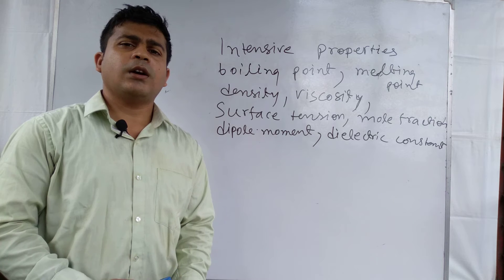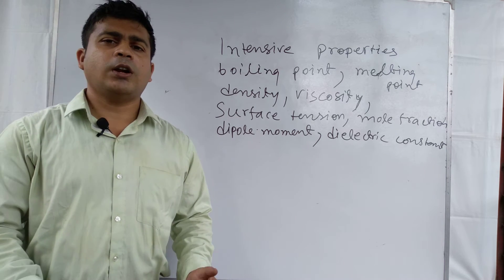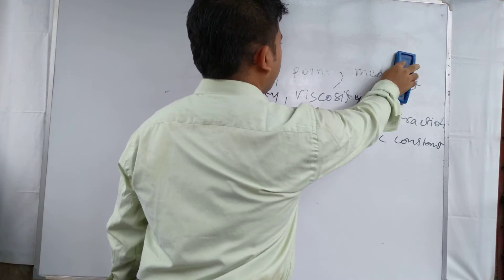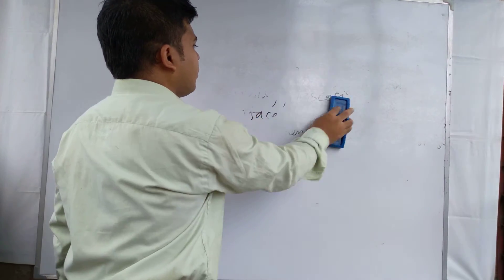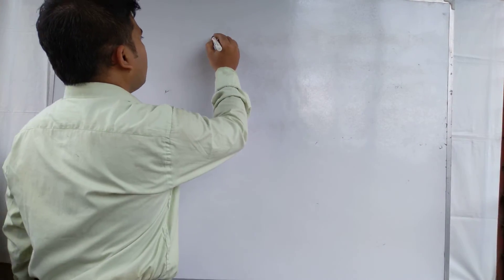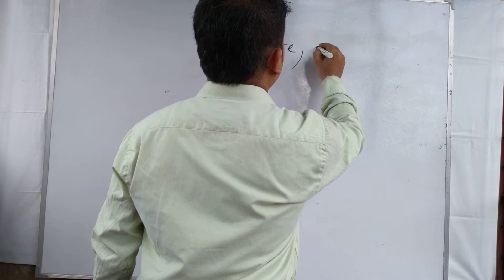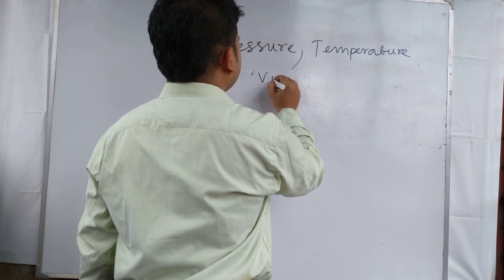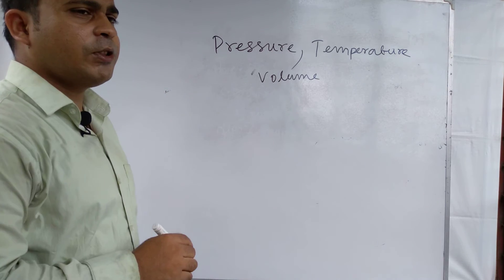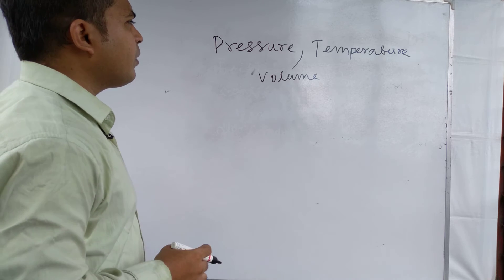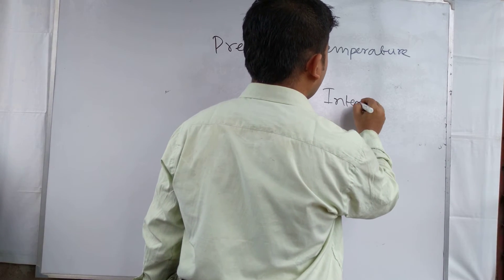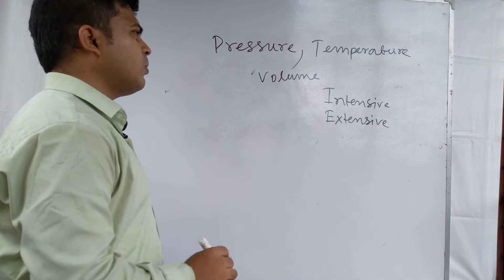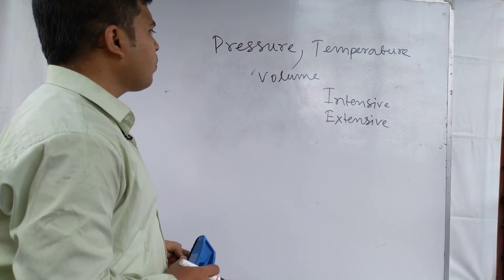These are the definitions and examples of extensive and intensive properties, which are called macroscopic properties. In an exam, if a question asks you to identify properties as extensive or intensive — for example, given pressure, temperature, and volume — how can you quickly identify them? There is a technique called mental partitioning.